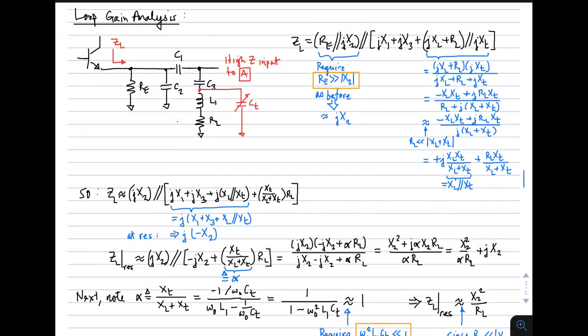Now the loop gain analysis, again very similar to before. We need the impedance looking out of the emitter, which I'm calling Z sub L. That's given by this parallel combination which shows up here, which in turn is in parallel with this combination shown here. So a little bit more complicated, but the same approach is used. As before, we require that R sub E, that bias resistor on the emitter, is much much greater than the magnitude of X sub 2. That lets us simplify this half of the parallel combination to just J X sub 2.